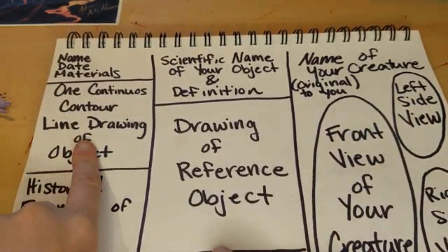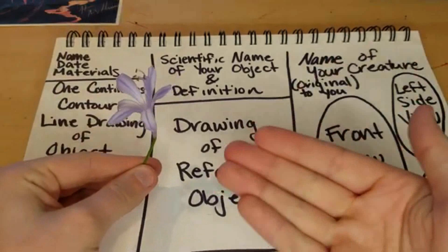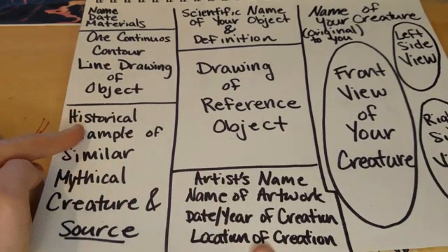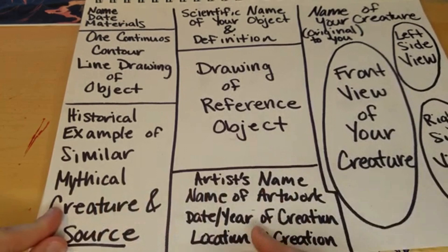The one continuous contour line drawing and the drawing of my reference object are just drawings of the object you chose from outside — nothing more, nothing less. Then we have the artist name, name of the artwork, date, year of creation, and location of creation for your historical example. These are just more information on the artist that you found inspiration from — also extremely essential.